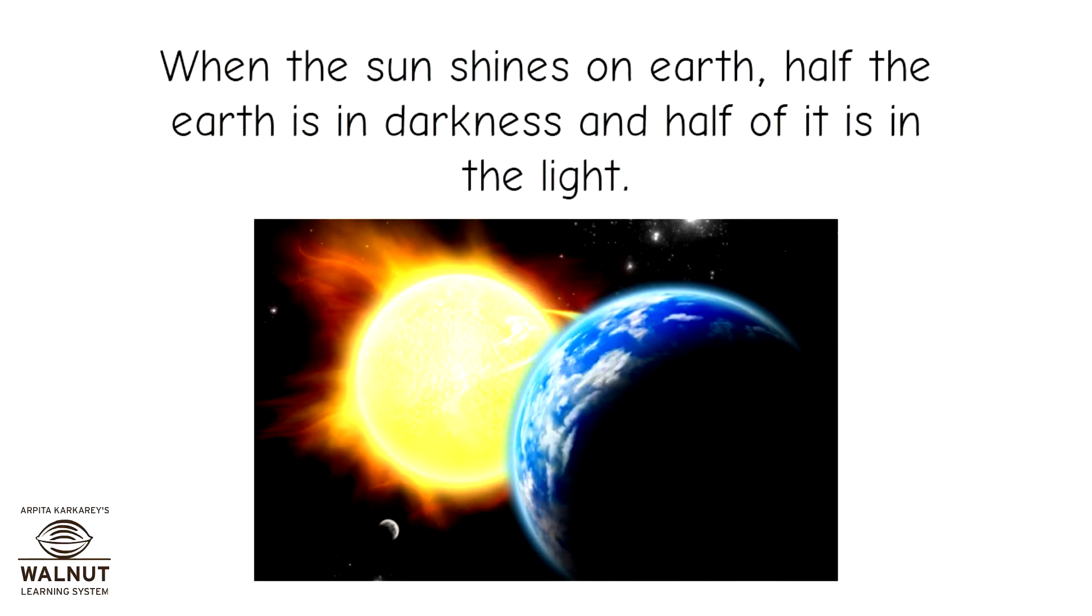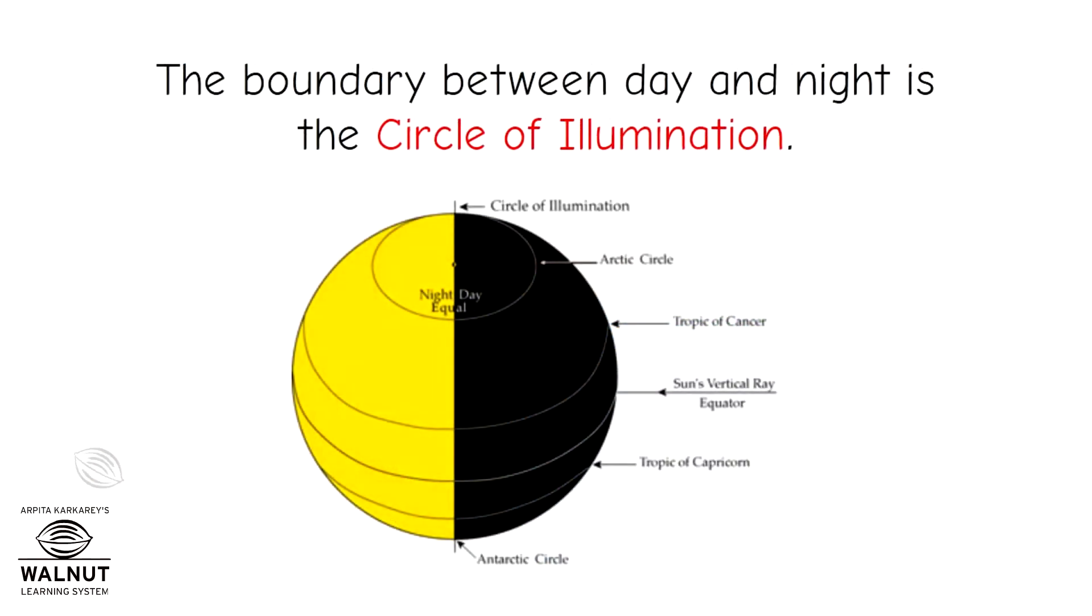When the sun shines on earth, half the earth is in darkness and half of it is in the light. The boundary between day and night is the circle of illumination.